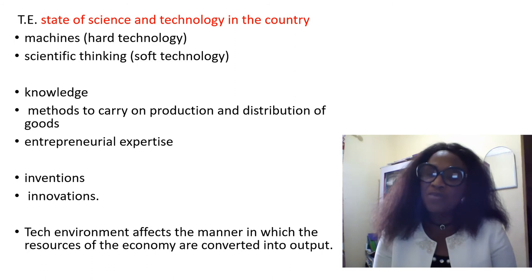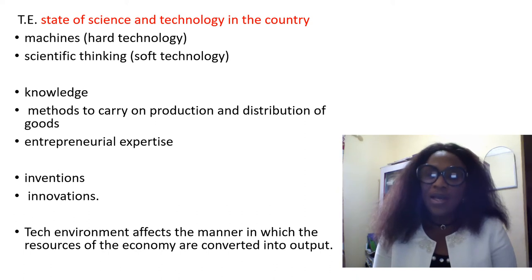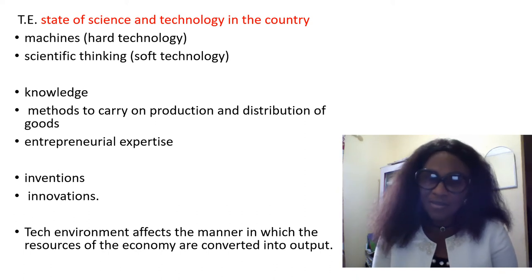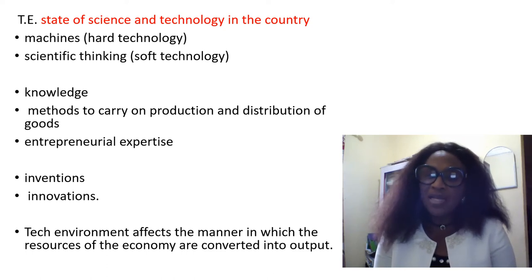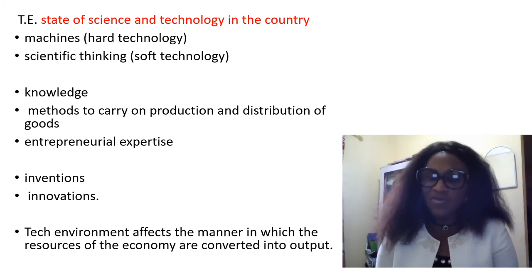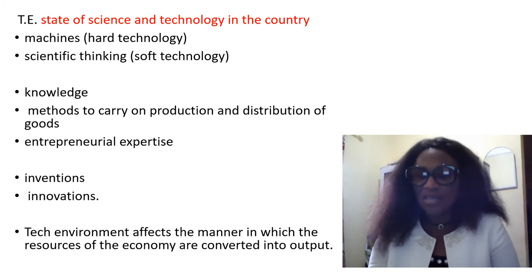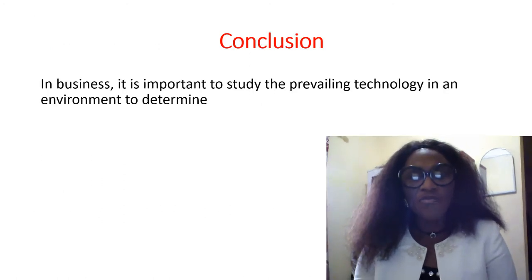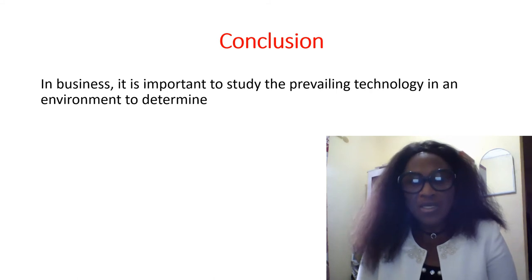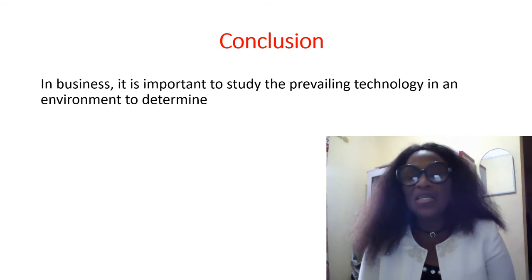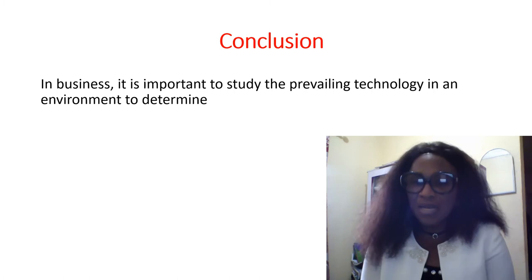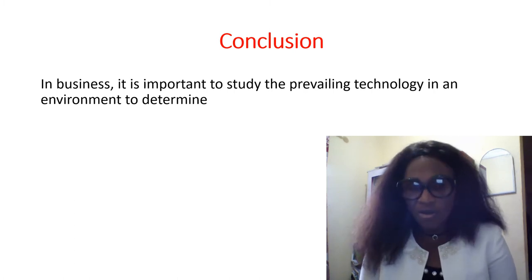If we need to be part of a global discussion, we need to adapt to technology. Or better still, even if we can't manufacture, we can ask people that we are doing business with to transfer technology as part of the deal for doing business in Nigeria. The point is that it is important to study the prevailing technology in the environment to determine the type of technology you need to acquire for your business as an entrepreneur.